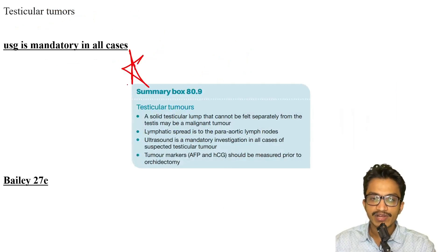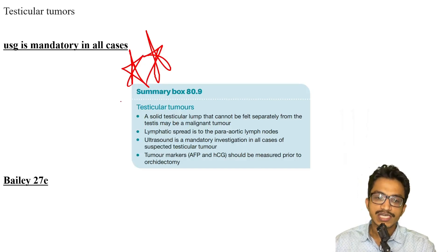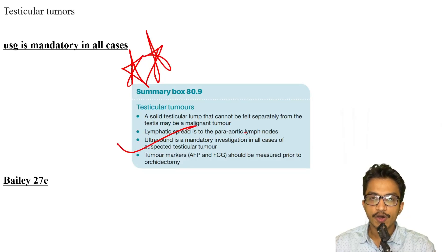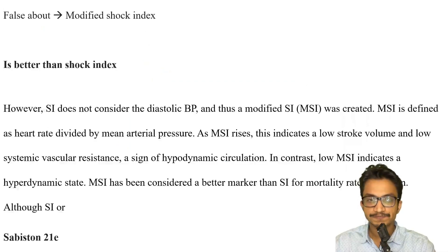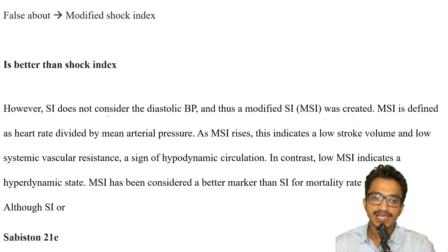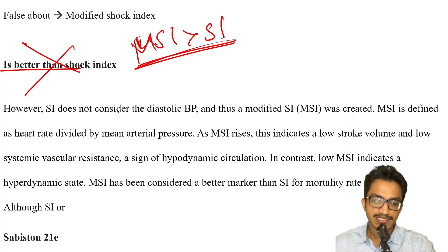For testicular tumors — taken from summary boxes — they spread to the para-aortic nodes. Ultrasound is mandatory in all cases of testicular tumors. Regarding modified shock index (MSI): MSI is better than the shock index and is more commonly used. This is from Sabiston 21st edition.